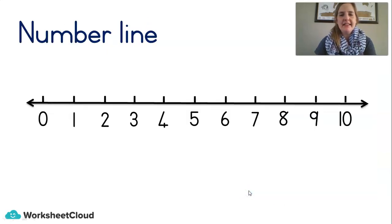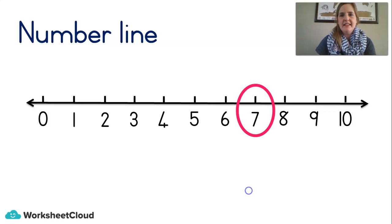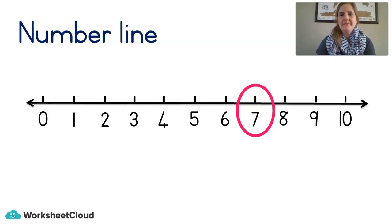Okay, have a look at the number line. Can you find the number 7 with your eyes? Do you see it? Great, there it is — number 7. Can you tell me what is 1 more than 7? 8. That's right. How about 1 less than 7? 6.